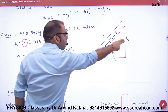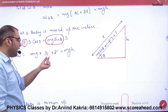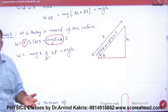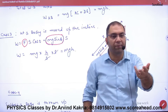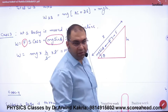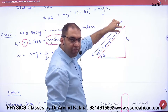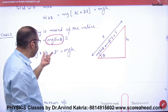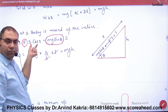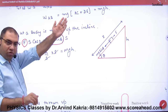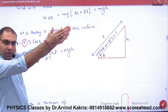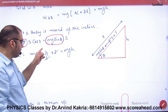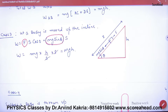Since sin theta equals h upon S, we substitute: work done equals mg into (h/S) into S. S cancels out, and the answer is mgh. So when you take the inclined plane, the work done is also mgh. The minimum force required is mg sin theta, and after substituting sin theta equals h by S, we again get the answer mgh.